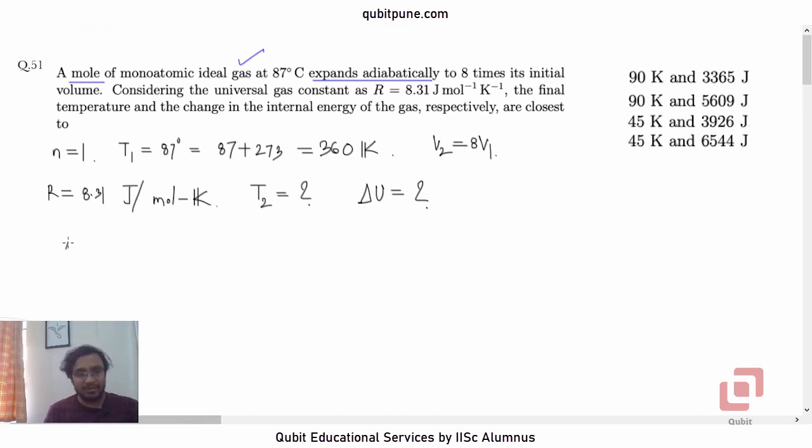We note that the process is adiabatic, which means Q = 0 by definition. If we apply the first law of thermodynamics, delta U is equal to Q minus W. And because Q is zero, delta U must be equal to negative W.